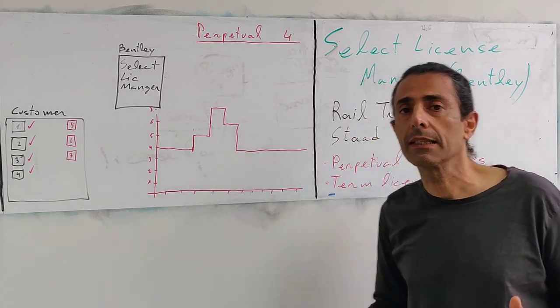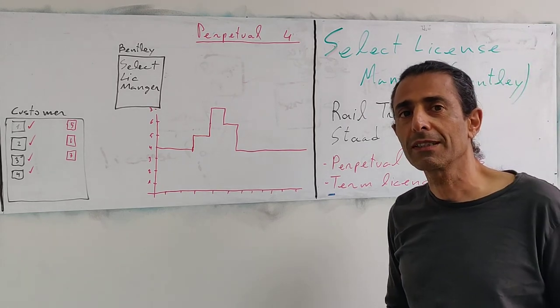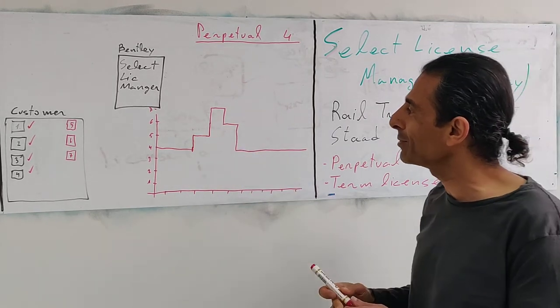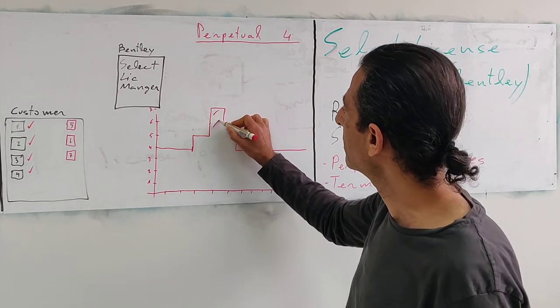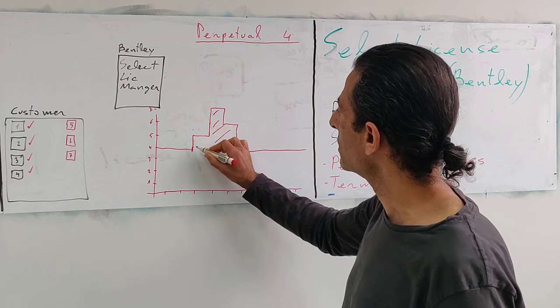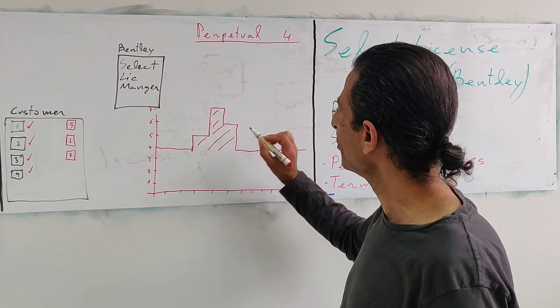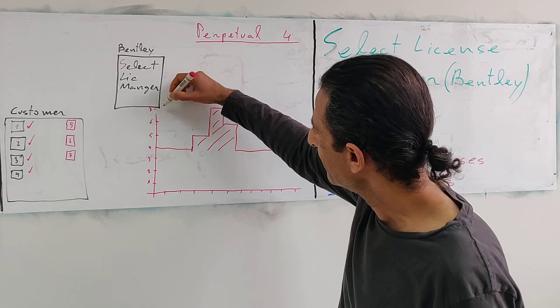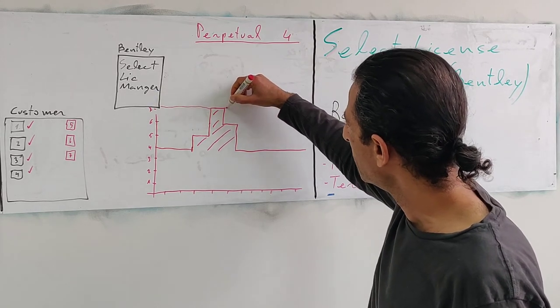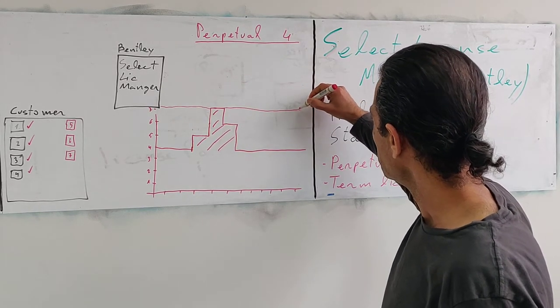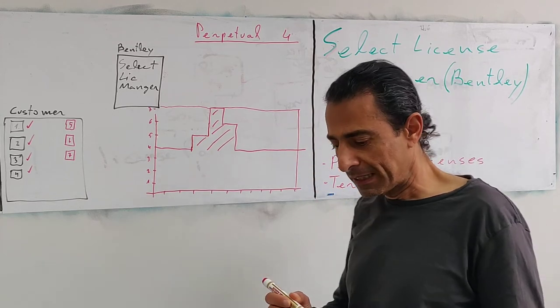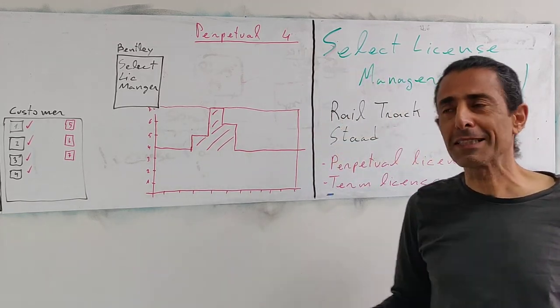So it makes sense that for the extra usage I'm going to pay here for the usage. But it's not working exactly like that and we are going to pay for all this period. So this is actually a very interesting model.